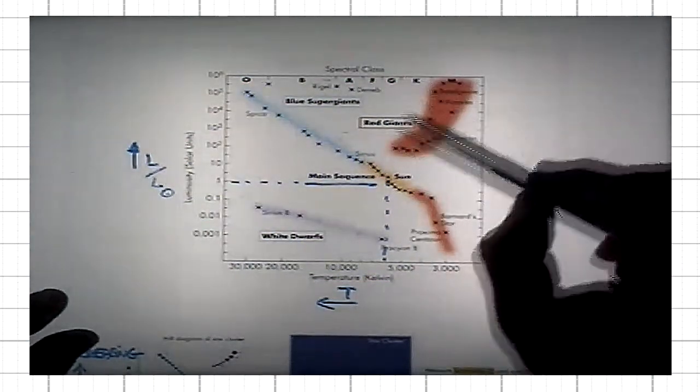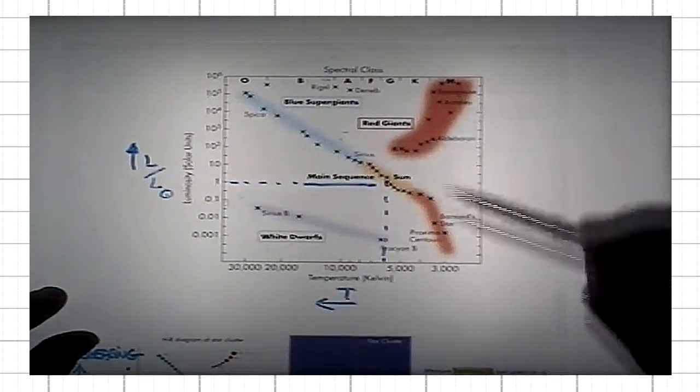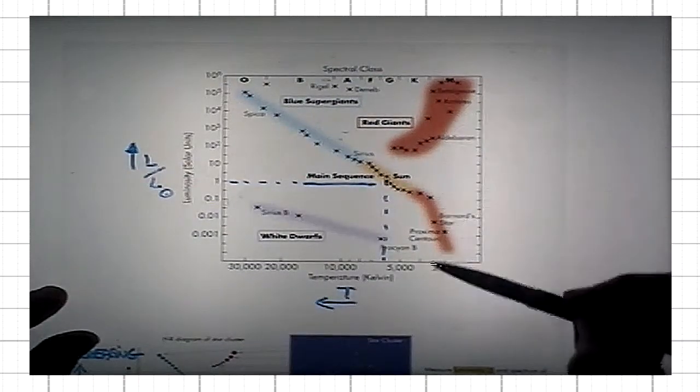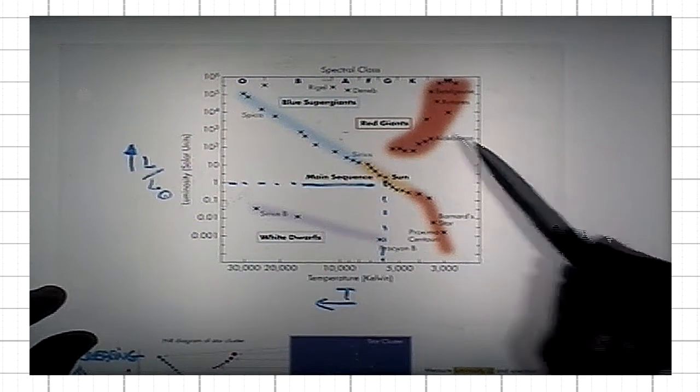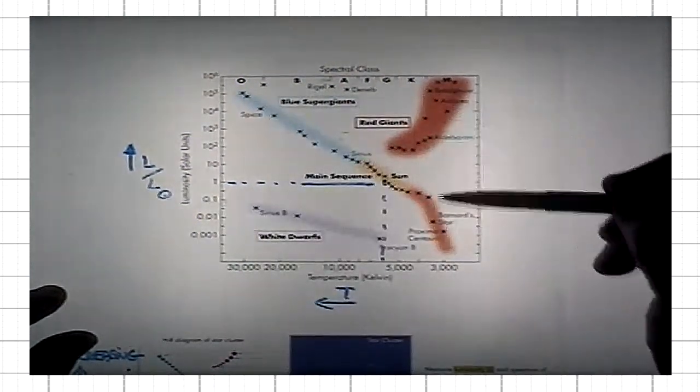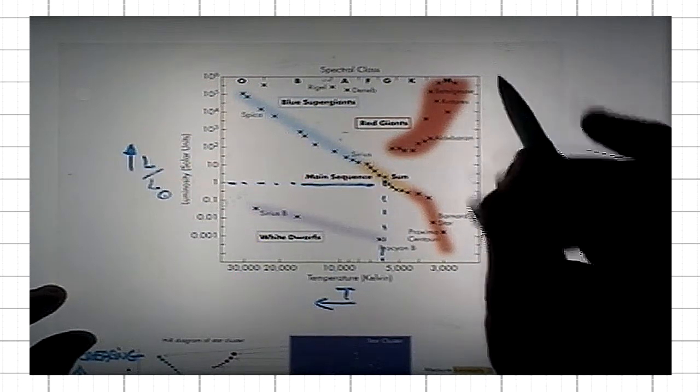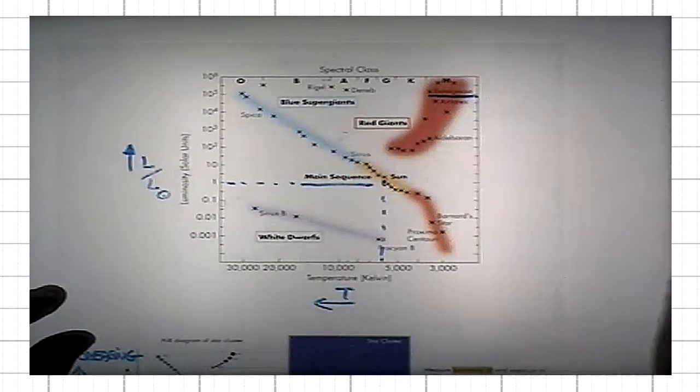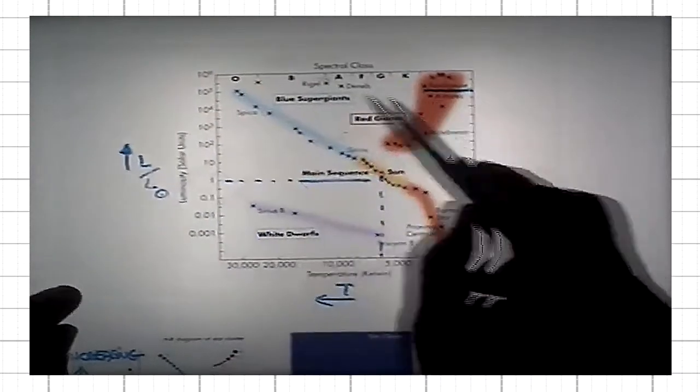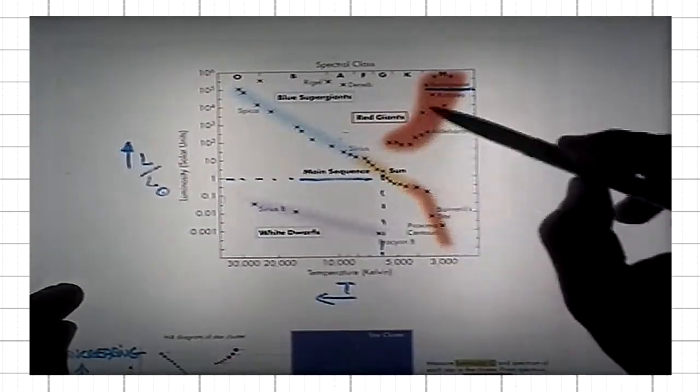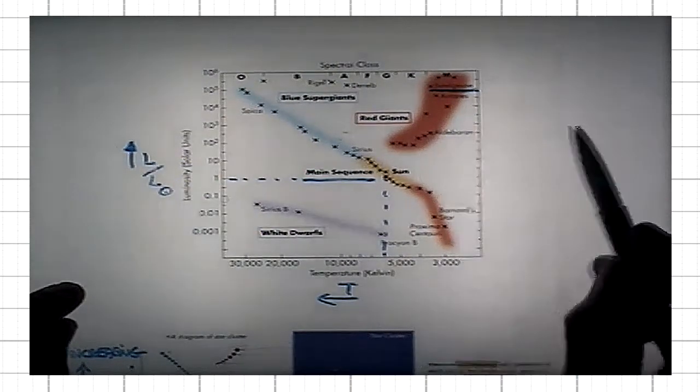The second group is this one in the upper right corner. It's upper, meaning they are very luminous, but it's right, the temperatures are low. We know from Stefan-Boltzmann's law that you can get high luminosity with low surface temperature only if the radius of the star is very large. Here is our friend Betelgeuse. We know that these stars here are very luminous, in spite of the fact that they are cool, because they have large radii, and therefore they are giants, they are red giants.